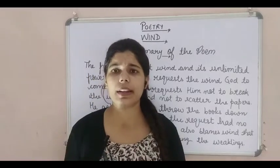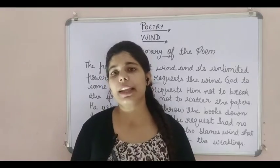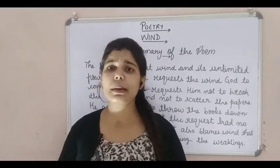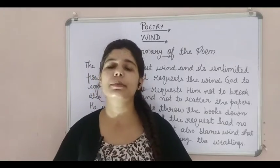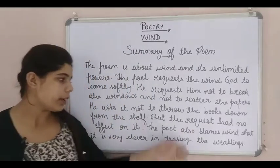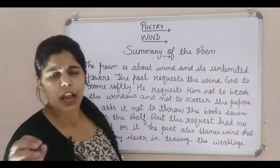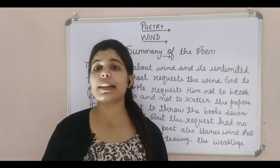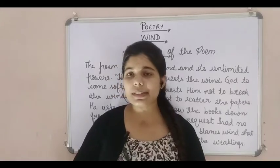The poet here considers himself a weak person. Among the things which the wind was scattering — the bookshelf, the shutters on the windows — each and everything is considered to be very soft and very weak. In that same manner, the poet is also blaming the wind that it is very clever in teasing the weaklings, just teasing all those things. This is how the poem starts.